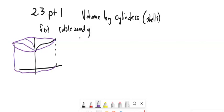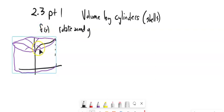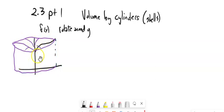Before, what we were doing with discs is we would turn this into something in terms of y — f(y) — and then we'd have to split it into parts, because part of this would be a washer and part would be discs.